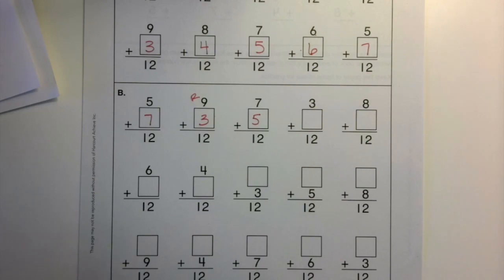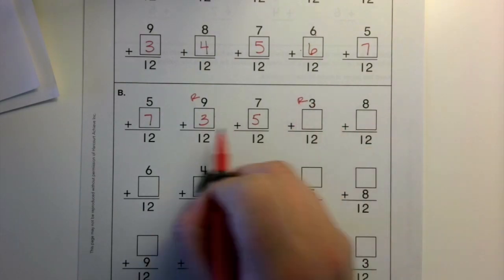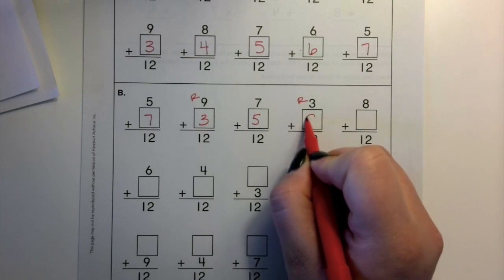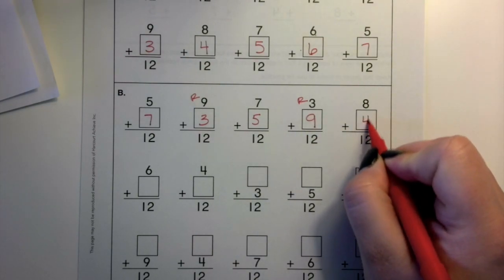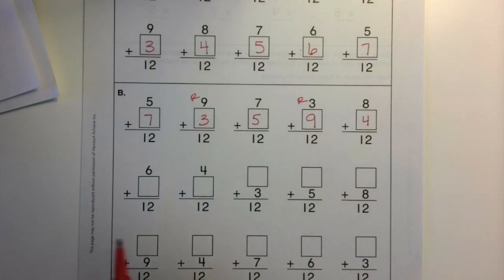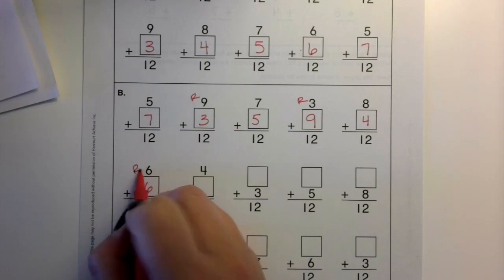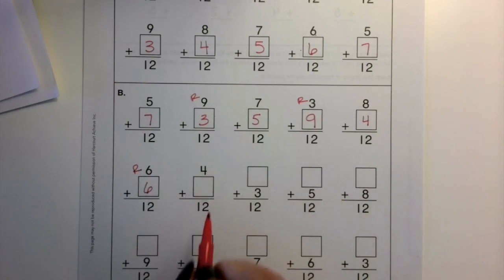7 plus what is 12? 5. 3 plus what is 12? Excuse me. 9. 8 plus what is 12? 4. 6 plus what is 12? 6. That's review. That's a double. 4 plus what is 12? 8.